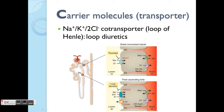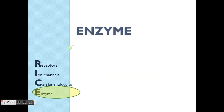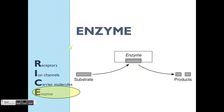Loop diuretics inhibit another co-transporter — the sodium/two chloride/potassium co-transporter. This again causes reduced ion reabsorption back into the body, leading to increased excretion.